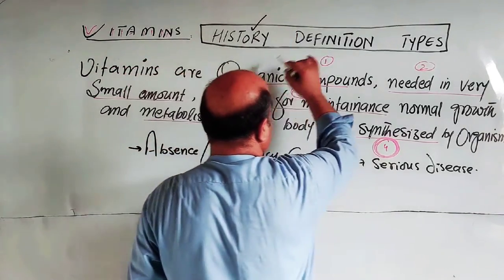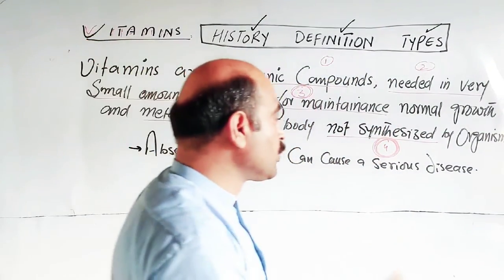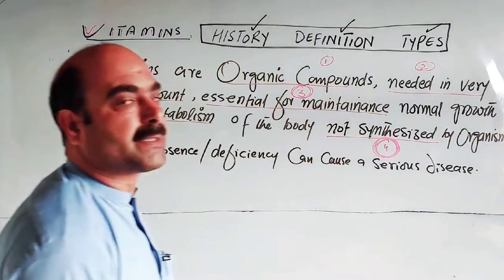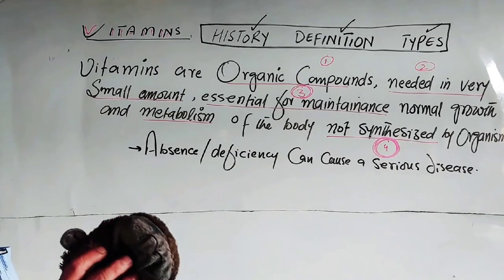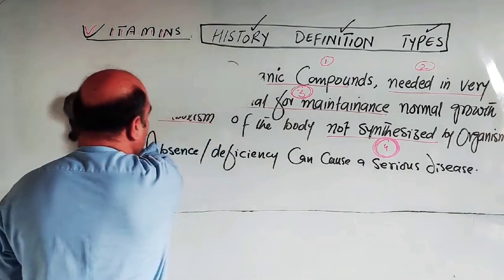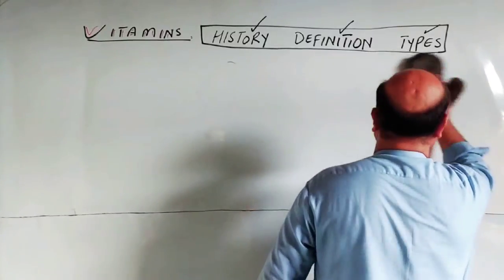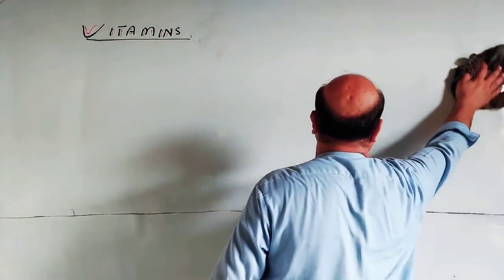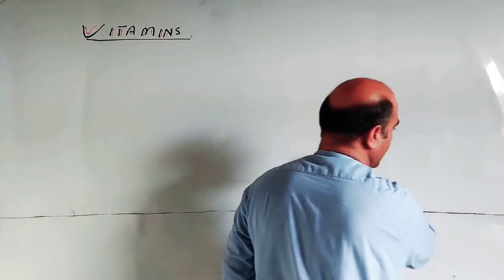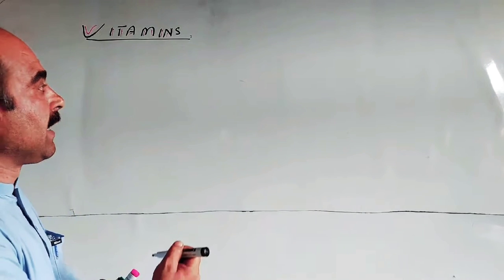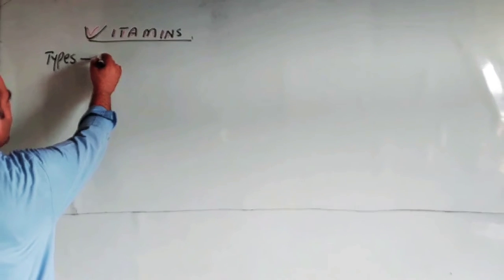Now let's discuss the types of vitamins. According to their solubility, there are two main types of vitamins: fat-soluble vitamins and water-soluble vitamins.